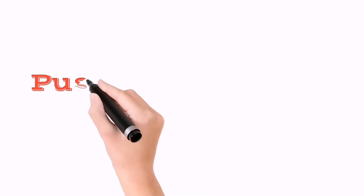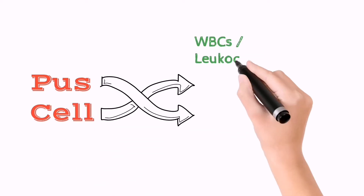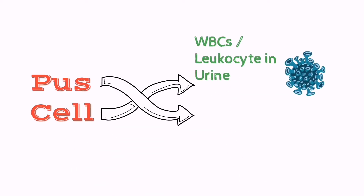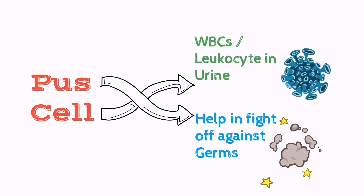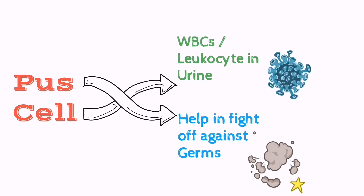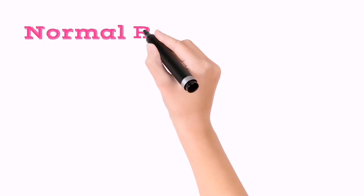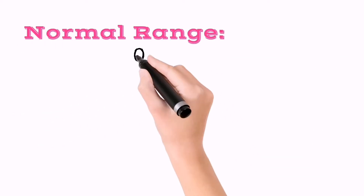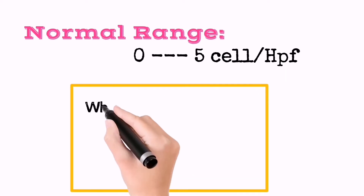First, what is a pus cell? Pus cells are the white blood cells or leukocytes in urine, which help in fighting off against germs. The normal pus cell count present in urine is from 0 to 5 cells per high power field.